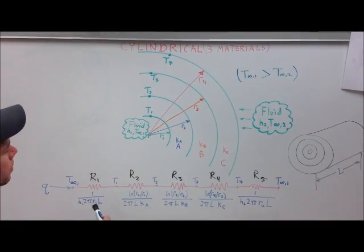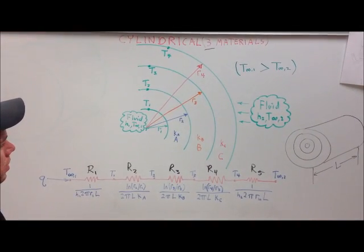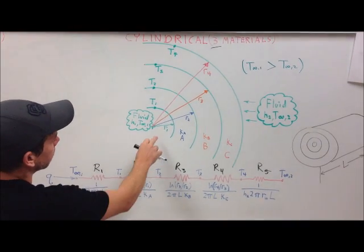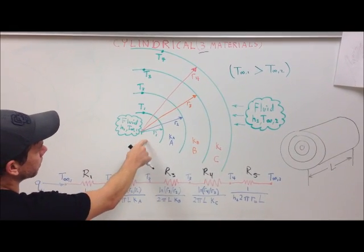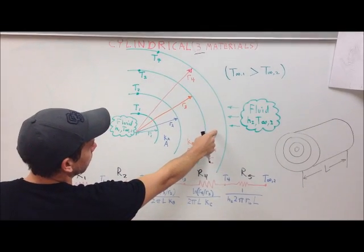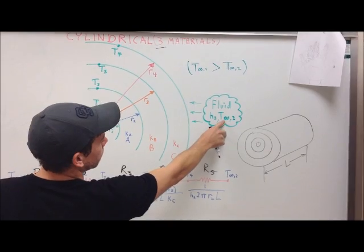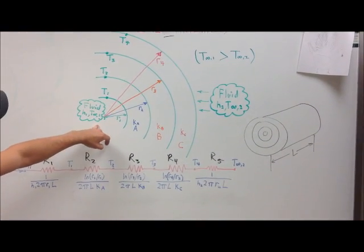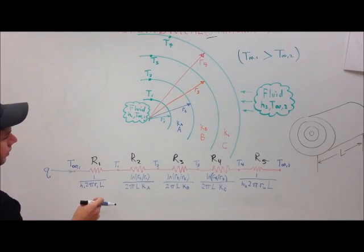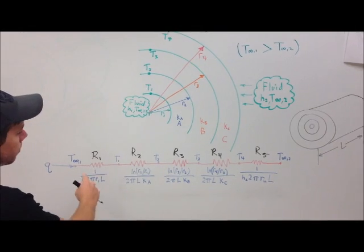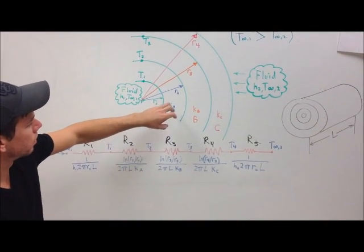Now we cover cylindrical coordinates with heat rates through three materials — a composite cylindrical wall. Inside the cylinder is a fluid with convection coefficient H1 at temperature T∞1. There are three different materials A, B, and C throughout the cylindrical system. On the outside is a second fluid with a different convection coefficient at a lower temperature. This gives five resistors total: R1 and R5 are convection resistors for the inside and outside; R2, R3, and R4 are conduction through materials A, B, and C.